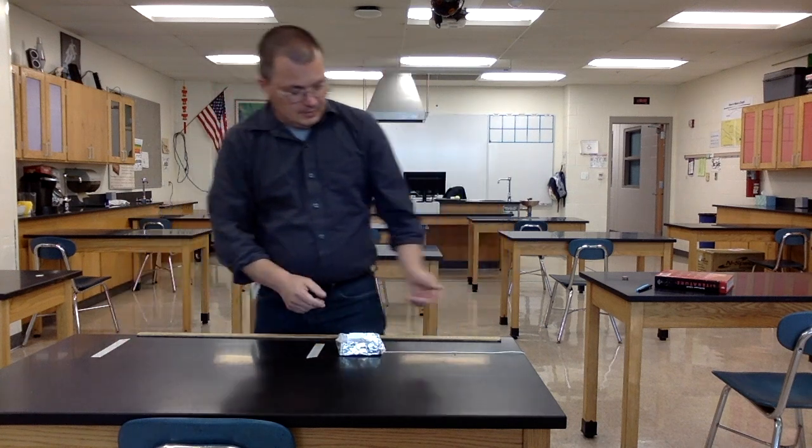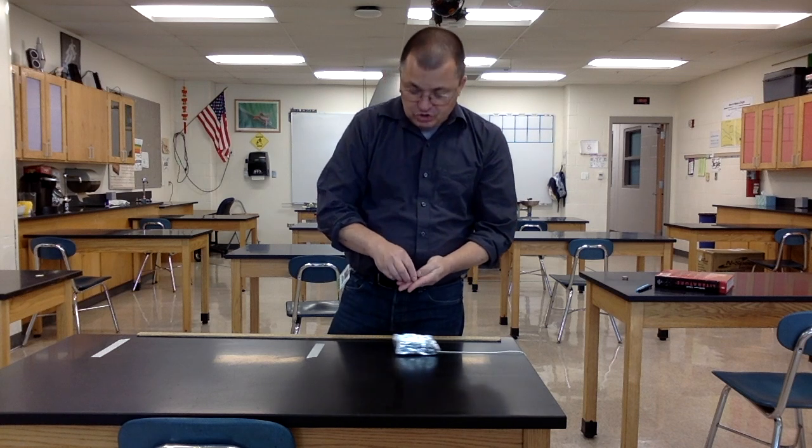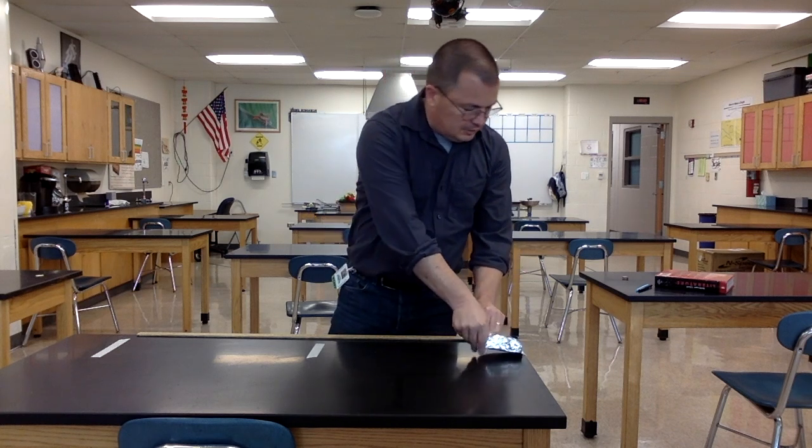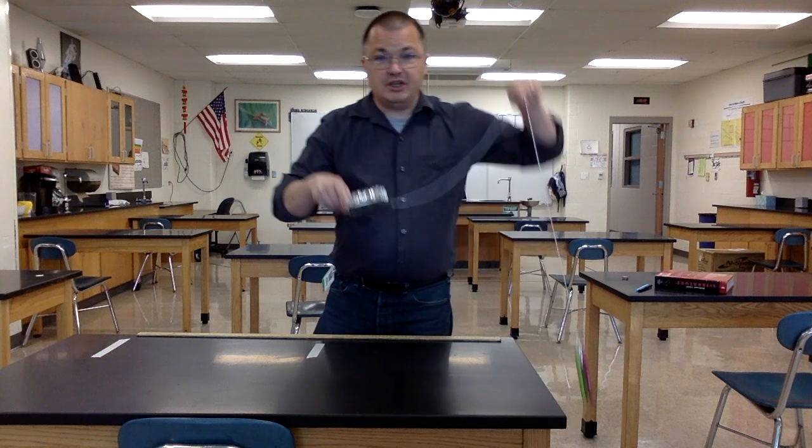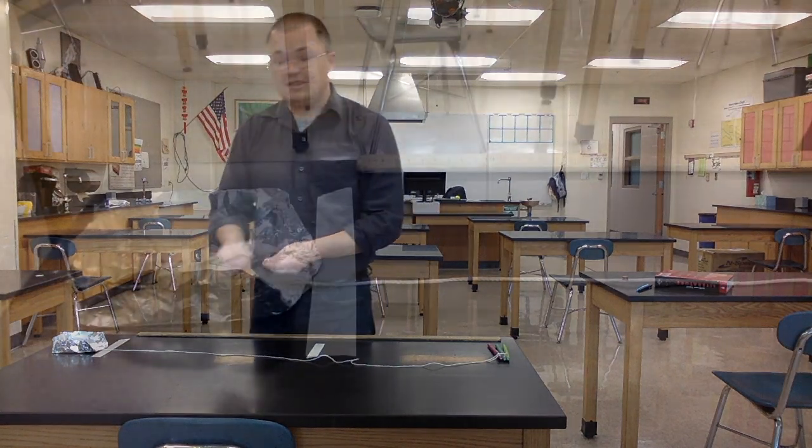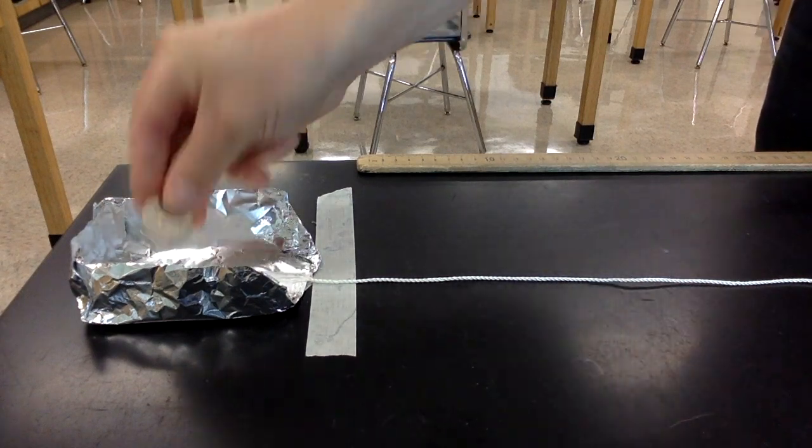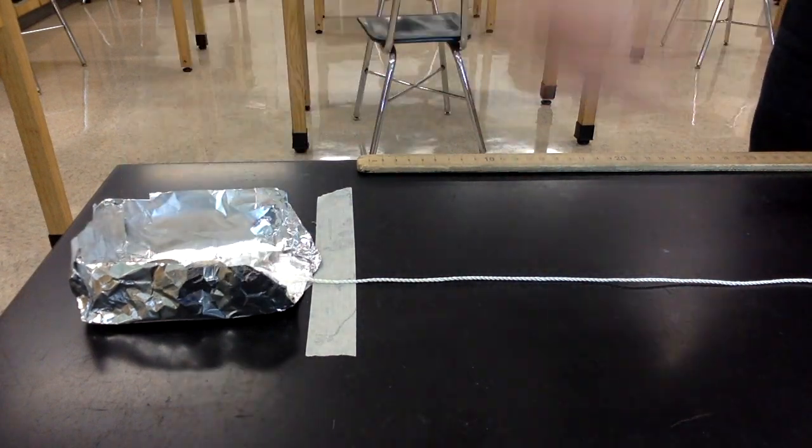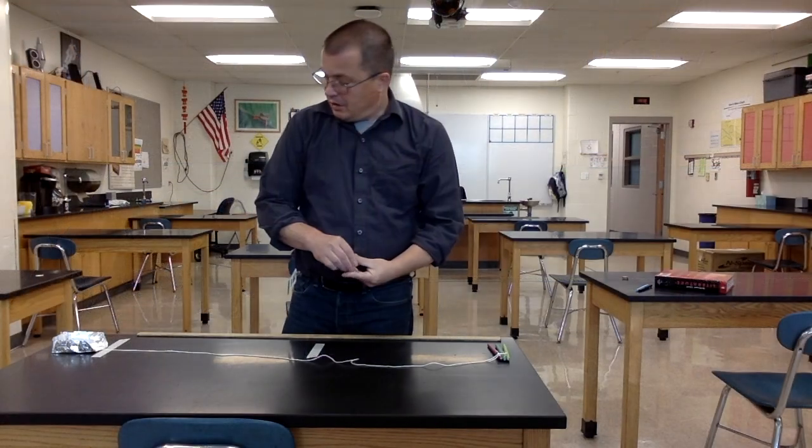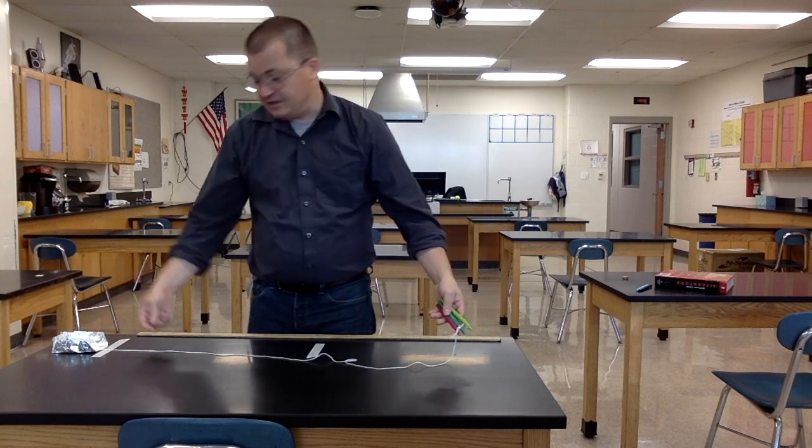In order to be an experiment, we have to change one variable. The variable we're going to change for part one is the number of quarters we put in the sled. On the other hand, in part two, we're going to change the number of pens. We'll leave the number of quarters the same.